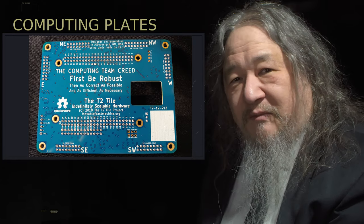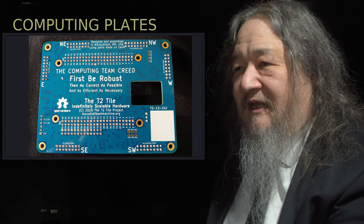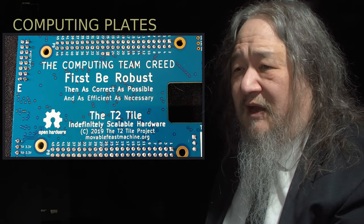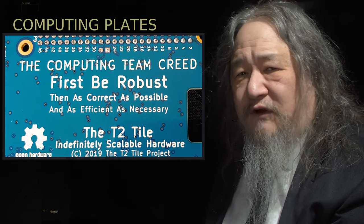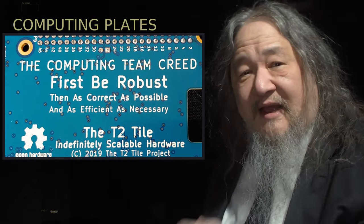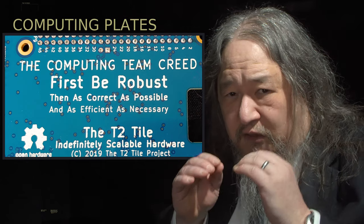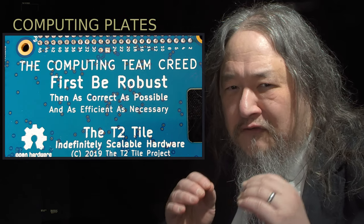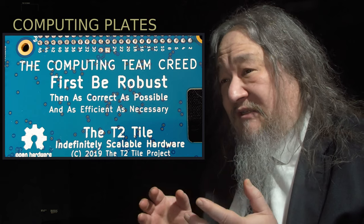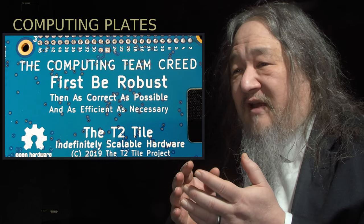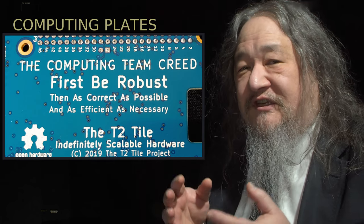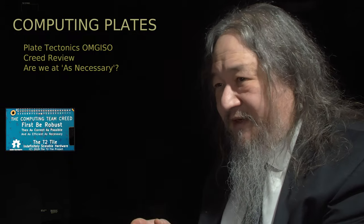Which brings us to the computing team creed. I haven't mentioned this lately. It's on the back of every T2 tile. The creed is very simple. First, be robust. Then, as correct as possible. And then, finally, as efficient as necessary. And the question is, are we arriving at an efficiency as necessary situation?